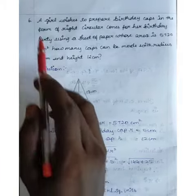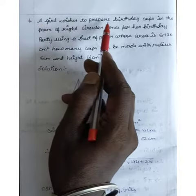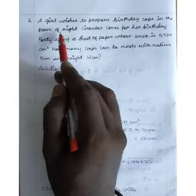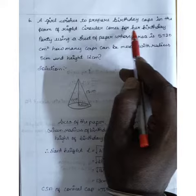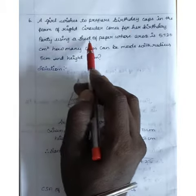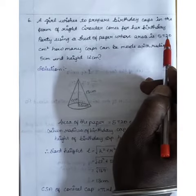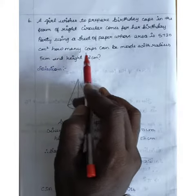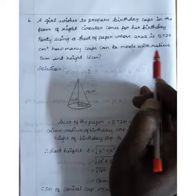Question number 6: A girl wishes to prepare birthday caps in the form of right circular cones for her birthday party using a sheet of paper whose area is 5720 cm². How many caps can be made with radius 5 cm and height 12 cm?